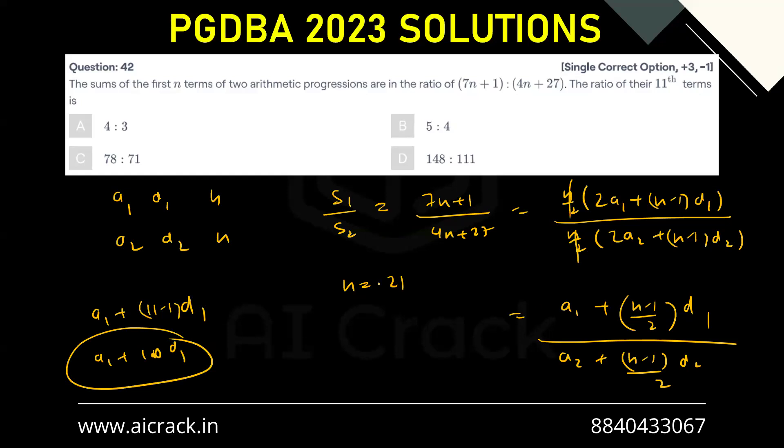If I put n equals 21 over here, I will be getting a1 plus 10, d1. That is nothing but 11th term.